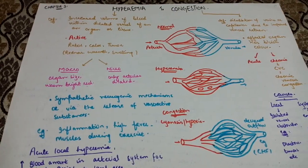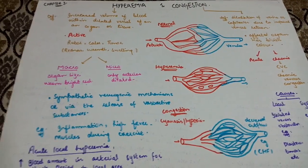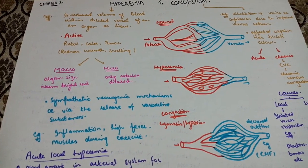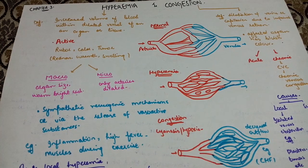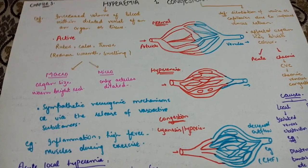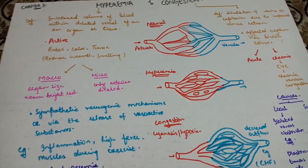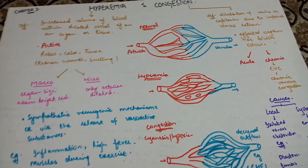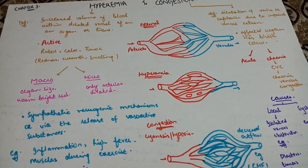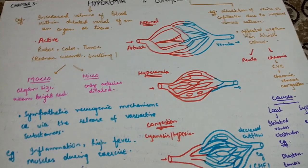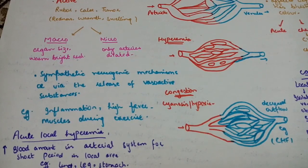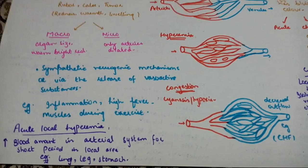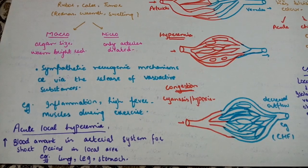Hyperemia means increased volume of blood within the dilated vessels of an organ or tissue. This is an active process associated with the cardinal signs: redness, warmth, and swelling. Hyperemia means the organ will appear warm and bright red in color, indicating that the arteries are dilated.